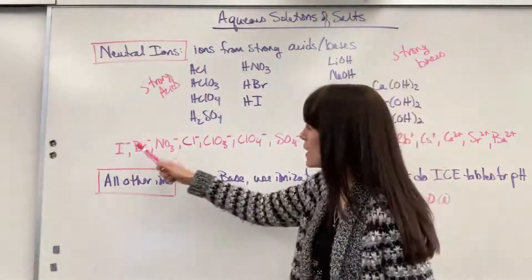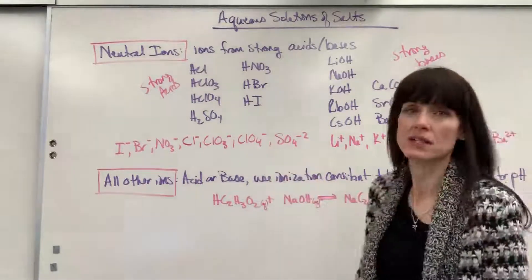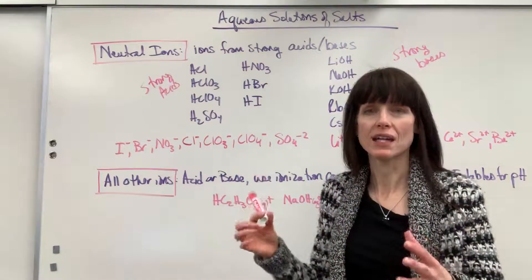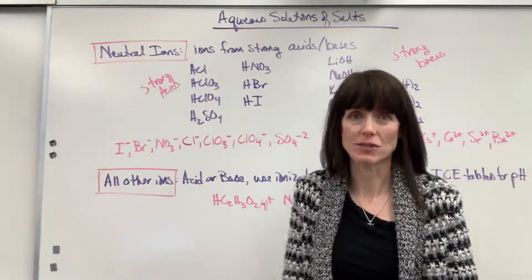So you just have to have these four ions memorized: iodine, bromide, nitrate, chloride, chlorate, perchlorate, and sulfate. If you have any of those from a salt that are put into water, they're not going to react with hydrogen.